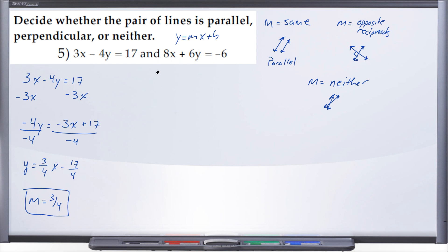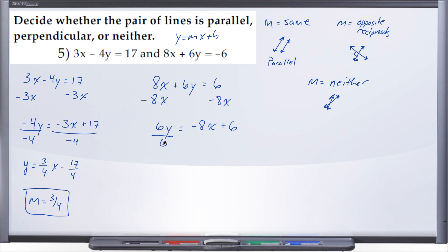Now let's put the second equation into y equals mx plus b to find its slope. We have 8x plus 6y equals negative 6. Subtract 8x from both sides: 6y equals negative 8x plus 6. Then divide by 6 on both sides, giving y equals negative 4 over 3 times x plus 1. So the slope for this line is negative 4 thirds.